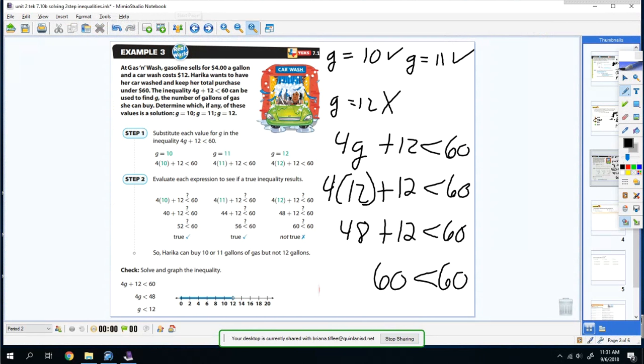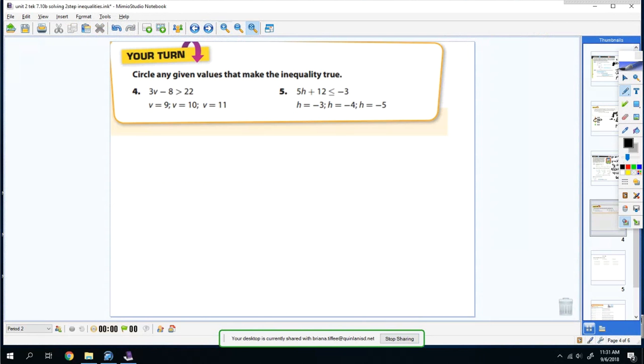All right. So I want you to try one. I want you to do number four and five. And the way that you do it is you plug them in. So you do 3 times 9 minus 8 is greater than 22. So it would be 27 minus 8 greater than 22. 27 minus 8 is actually 19. So is 19 greater than 22? Nope.